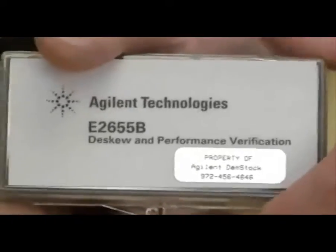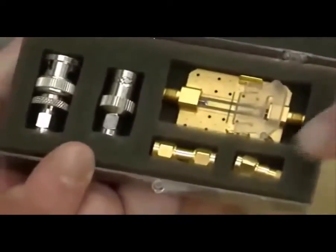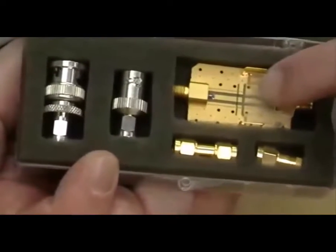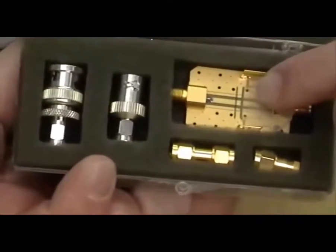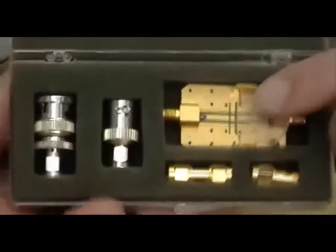This fixture comes with all 90000A series scopes, though not the X series, and it includes some SMA to BNC adapters, a 50 ohm load, and the calibration fixture itself. We'll note that there is a green line on the fixture. This is for doing a channel-to-channel skew calibration with probes.